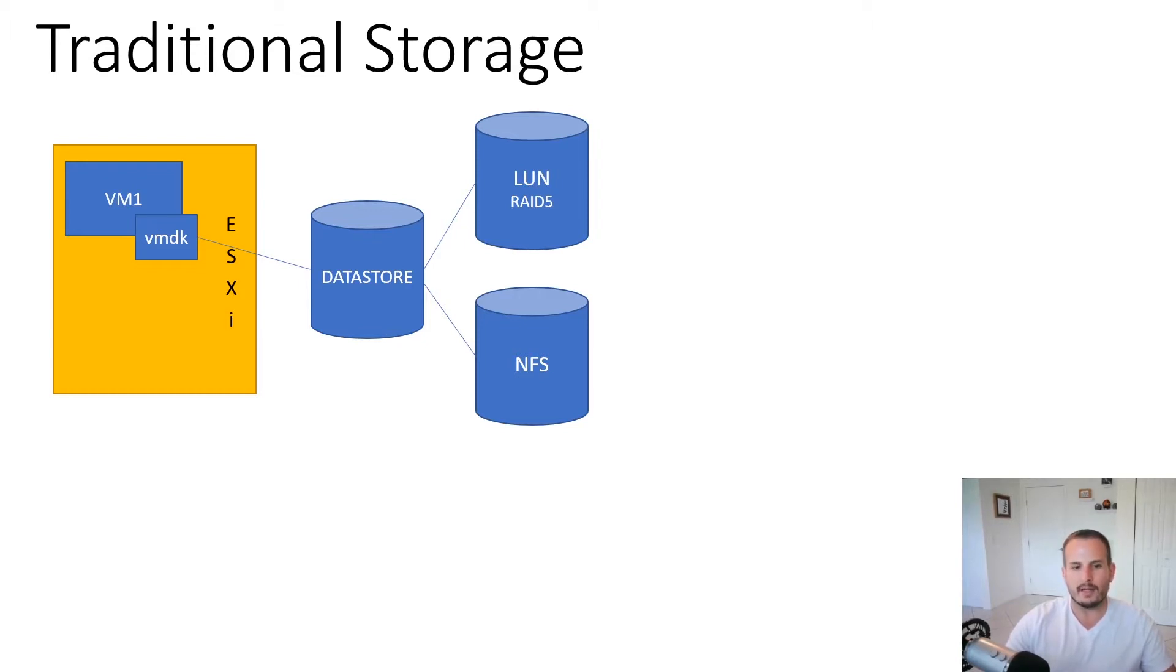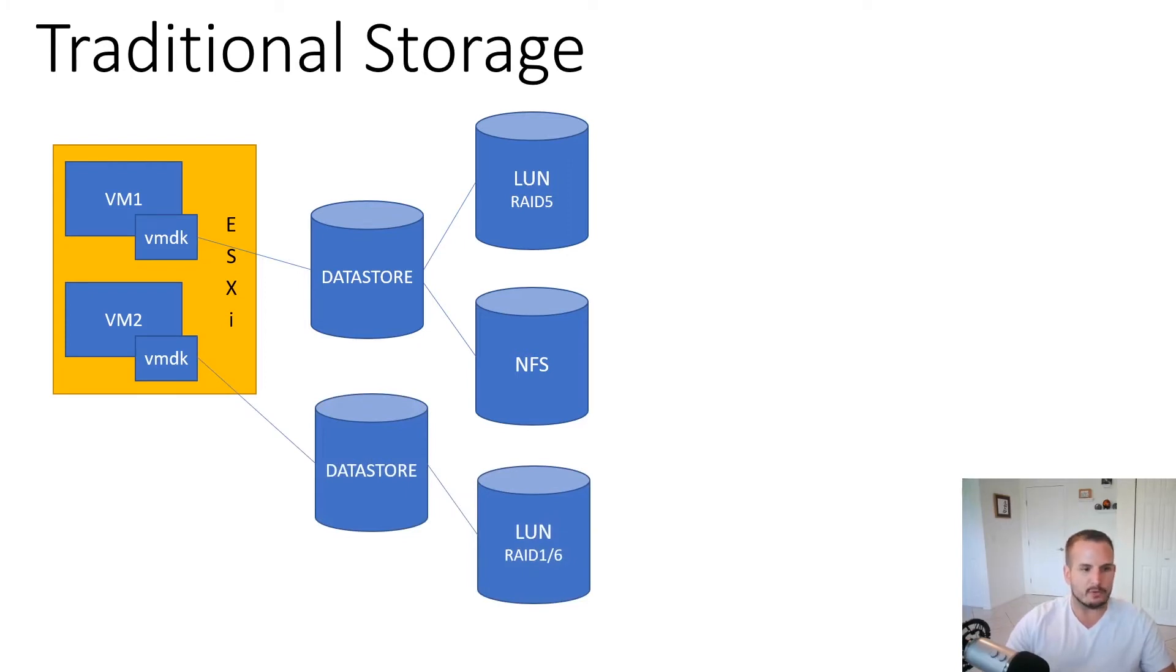But what happens when a request comes in for a new VM that requires some sort of RAID 6 or RAID 1 protection? We can't put it in our current data store that's configured for RAID 5, so we have to put that VM in a new data store. That data store has to be configured with the appropriate RAID configuration. You can see that the configuration of the storage service is not done on the VM level, it's actually done on the storage level, the LUN level. As an administrator, this requires you to pre-configure everything in advance, and you may not always know what storage option you'll actually be needing. Then you have to go to the storage administrator if you're with a larger organization to configure this for you.